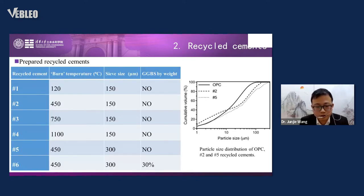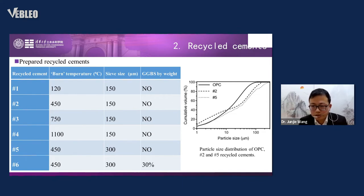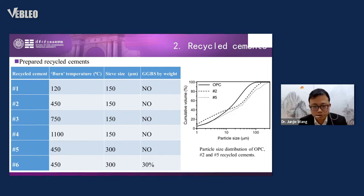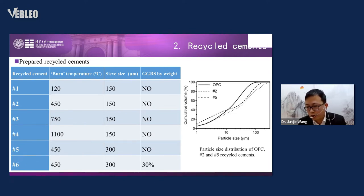We prepared six types of recycled cement. In numbers five and six, we added 30% GGBS to achieve better workability, as we found the recycled cement was difficult to mix. The right side shows the particle size distribution comparing number two, number five, and OPC. We compare these three because the 450°C burning temperature gives the best performance, and we want to compare that cement with ordinary Portland cement.